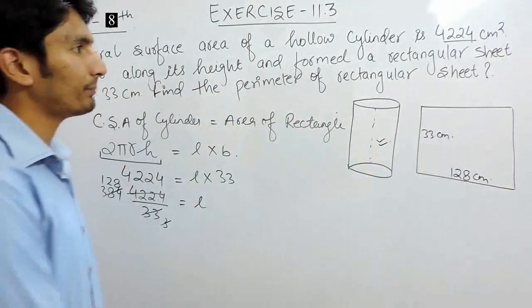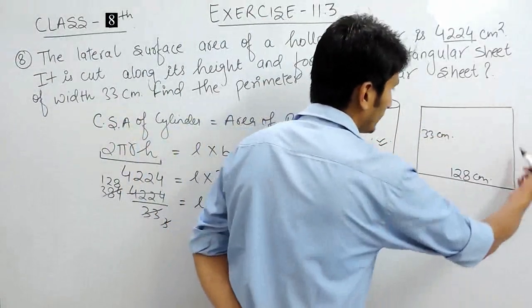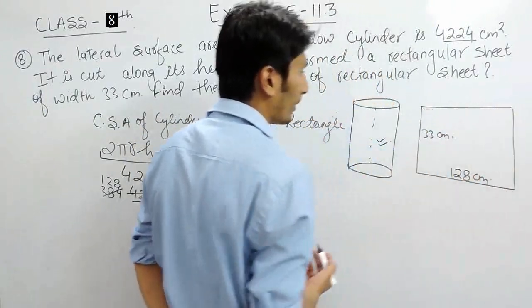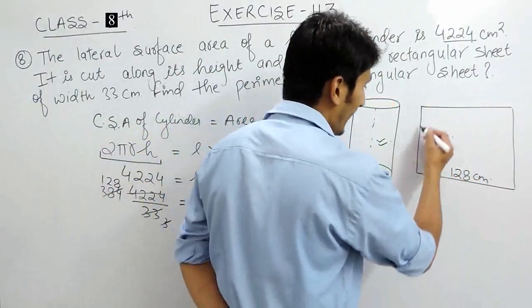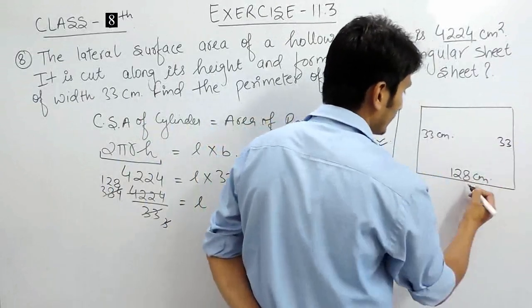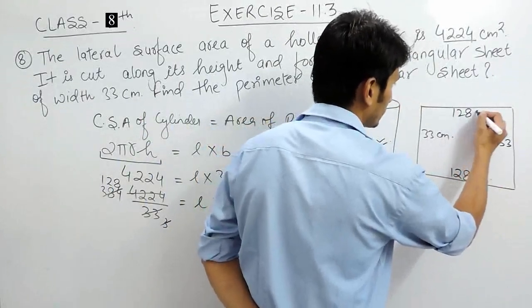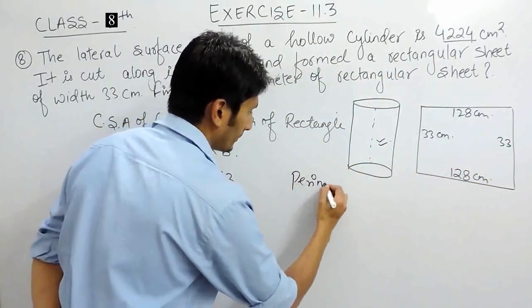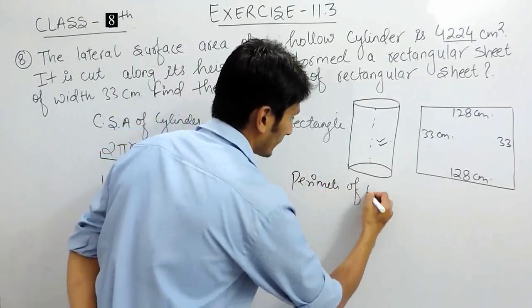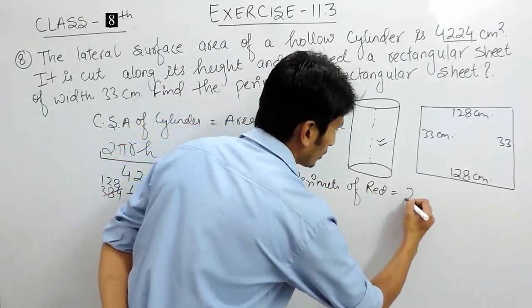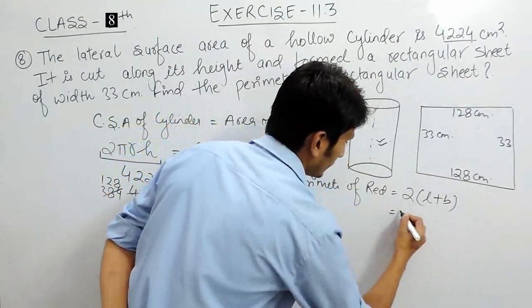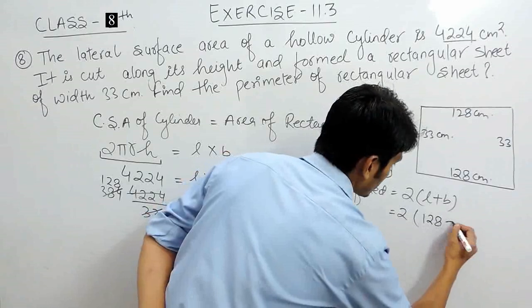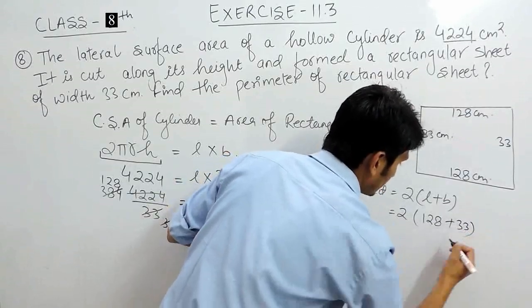Now, if you want to find the perimeter of this rectangular sheet, we know that the perimeter is nothing but the sum of its outer boundaries. We can simply add this breadth plus this breadth and this length plus this length, or either you can use the formula for the perimeter of a rectangle which is equal to twice length plus breadth. Here, twice, our length is 128 cm and our breadth is 33 cm.